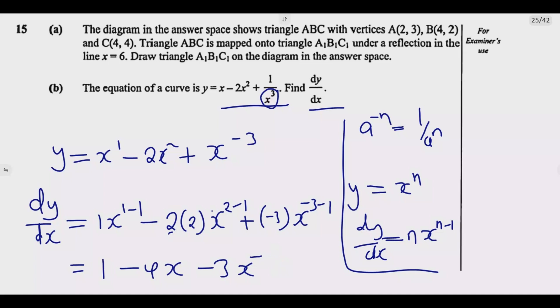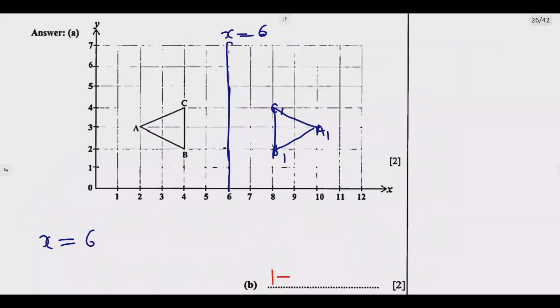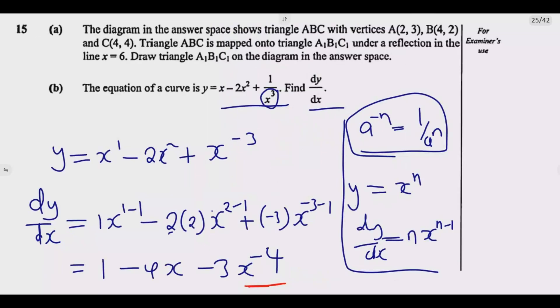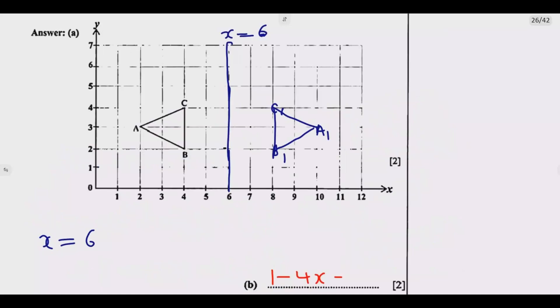We can use this principle so this means 1 over X to the power 4. So we can write it in the answer space. We know that is 1 minus 4X minus 3 over X to the power 4. When you do this you're good to go and you get the full marks.